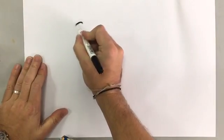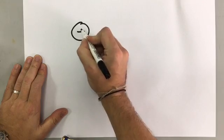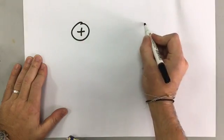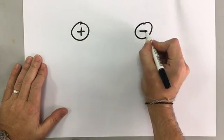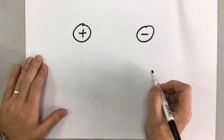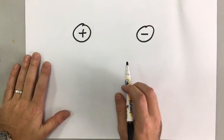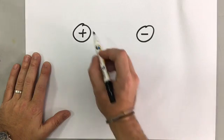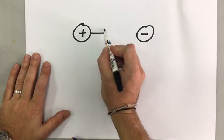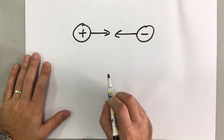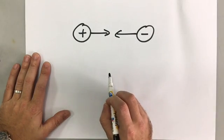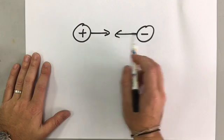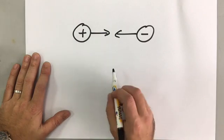There are two types of charge: you can either have a positive charge or a negative charge. A positive charge and a negative charge, when they're put next to each other, they will be attracted to each other. Opposite charges attract.